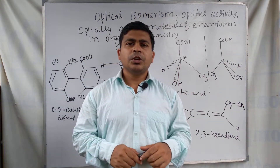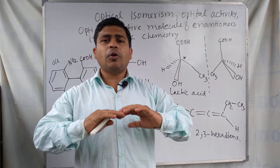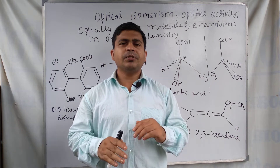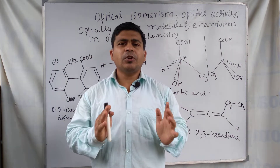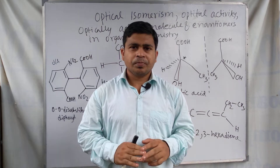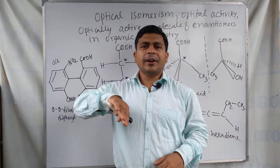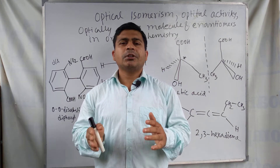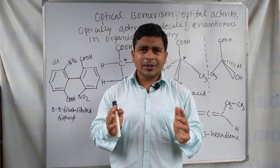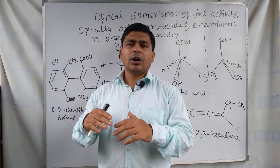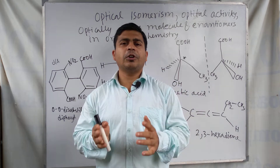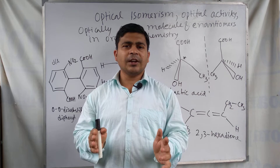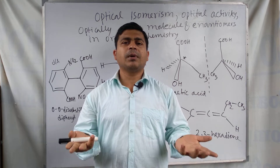In optical isomerism, some organic molecules show optical activity, meaning they can turn the plane of polarized light either right or left. If they turn the plane of polarized light to the right, we call them dextrorotatory. If the compound turns the plane of polarized light to the left, we call it levorotatory. In modern terminology, D is designated as plus (+) and L is designated as minus (−).